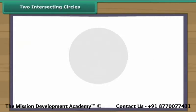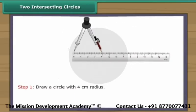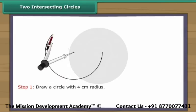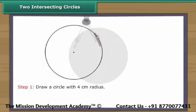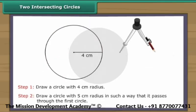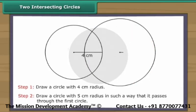Two intersecting circles. Intersecting circles may or may not have the same radius. Let us now draw intersecting circles. Draw a circle with four centimeters radius. Draw a circle with five centimeters radius in such a way that it passes through the first circle. We have two intersecting circles.